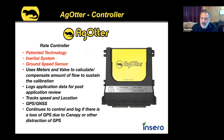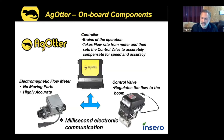That covers the components — the GPS antenna feeds the GPS board inside the controller, and the ground speed sensor gives us accurate speed. Any questions on the components themselves and how the system works?